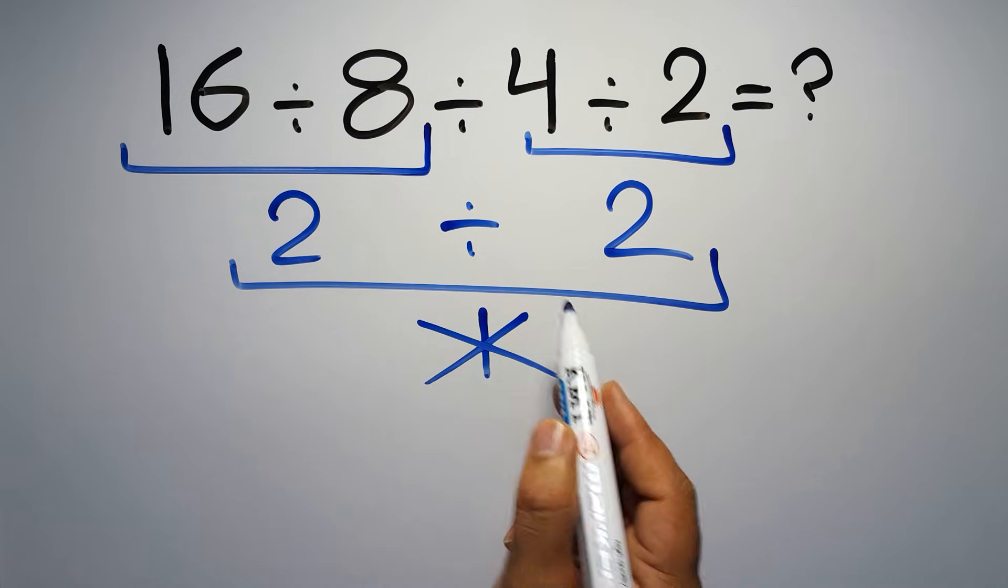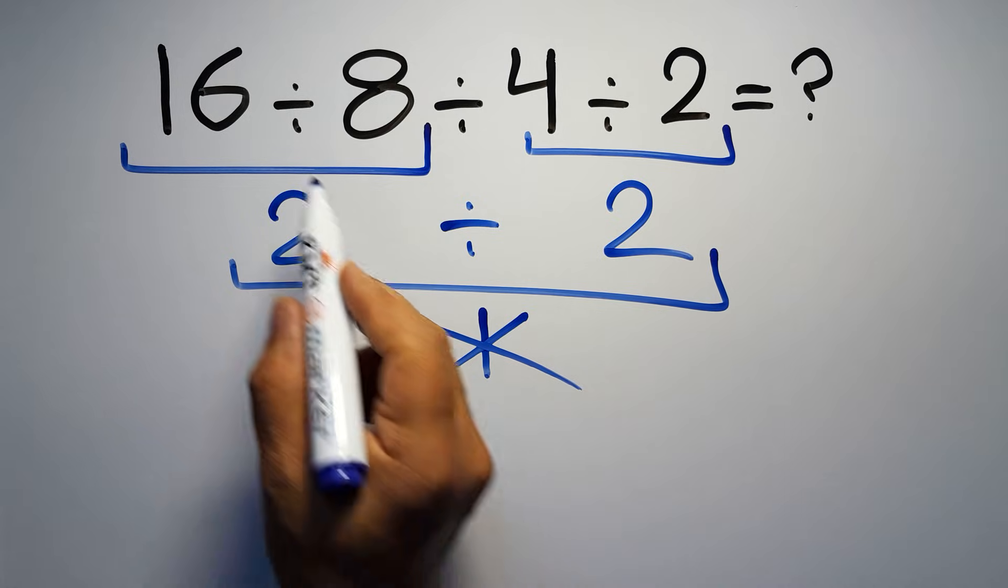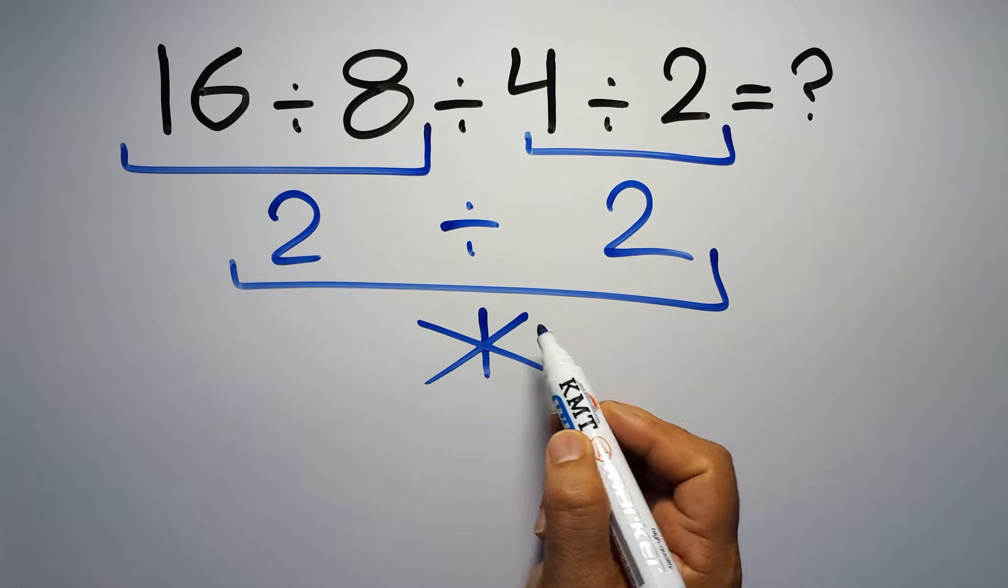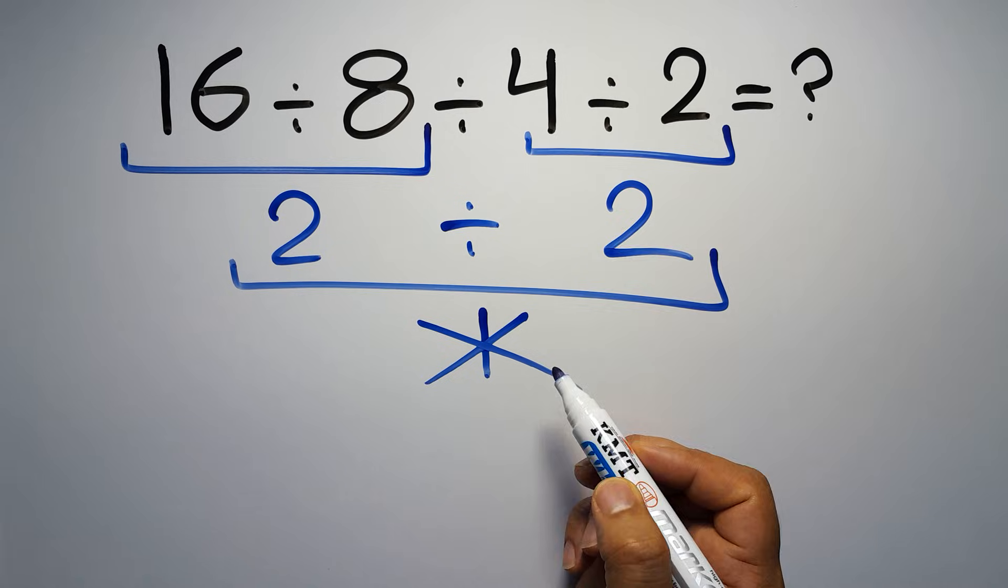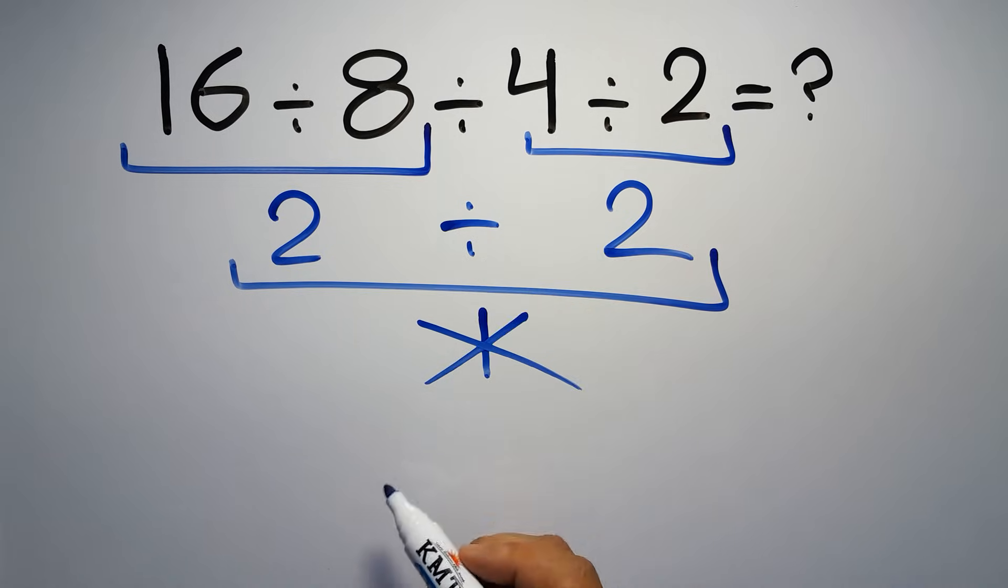have more than one division in an expression, we have to work from left to right. So here, first we have to do this division, then this division, and finally this division. If we do this division before this division, it is wrong.